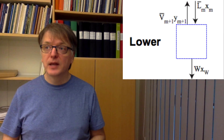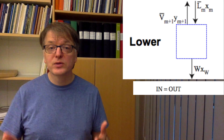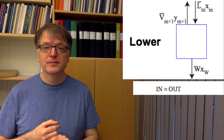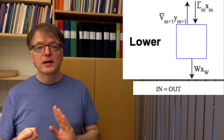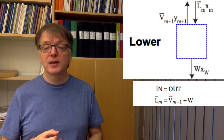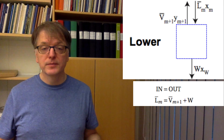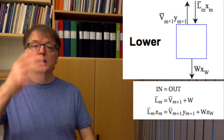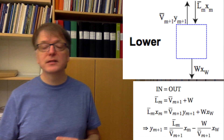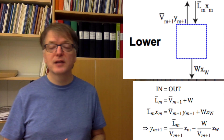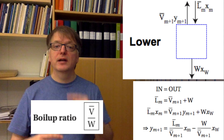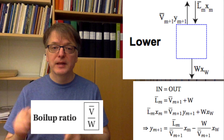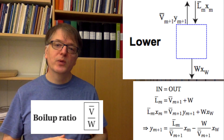For the lower part — where bars over L and V denote flows below the feed — the total balance is L-bar equals V-bar plus W. The mass balance for the volatile component is L-bar times X equals V-bar times Y plus W times X_W, rearranging to Y equals (L-bar/V-bar) times X minus (W/V-bar) times X_W. W divided by V-bar, when inverted, gives the boil-up ratio. The boil-up ratio and the reflux ratio are two important design parameters that can also be changed when the system is running.